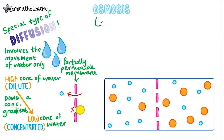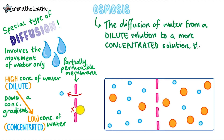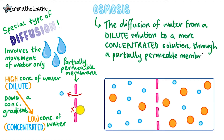To sum up our definition of osmosis: it is the diffusion of water from a dilute solution to a concentrated solution through a partially permeable membrane. It is worth noting that just like diffusion, it is a passive process, because it happens down a concentration gradient, and therefore no extra energy is needed.